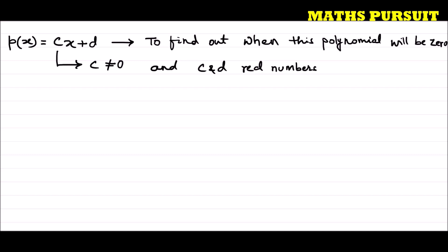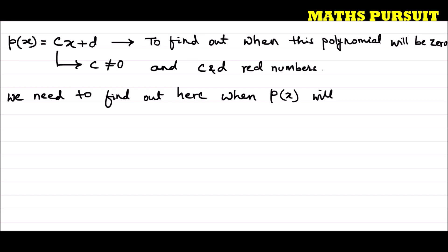To find out when this polynomial will be zero, we need to find out when p(x) will be zero. That means we can write p(x) = 0. This implies cx + d = 0, because p(x) = cx + d as given by the question. So if we consider p(x) = 0, then this implies cx + d = 0.